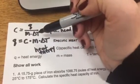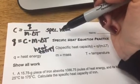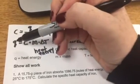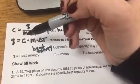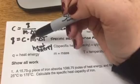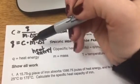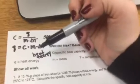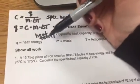So C equals Q over M times change in T, and that is for finding specific heat. This equation is for heat energy: Q equals C, specific heat capacity, times mass times change in temperature. This one is good to use if the problem asks you to find the heat energy.